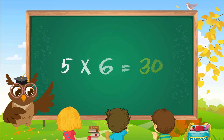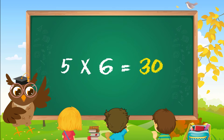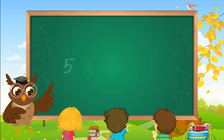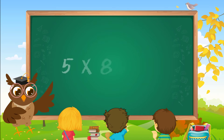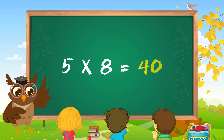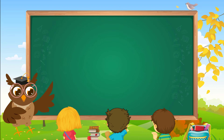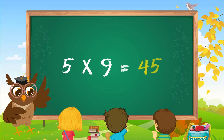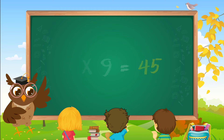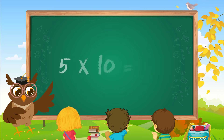Five 6s are 30. Five 7s are 35. Five 8s are 40. Five 9s are 45. Five 10s are 50.